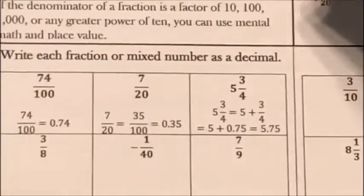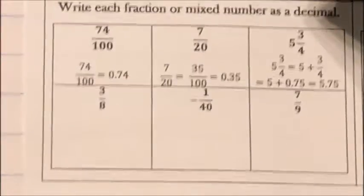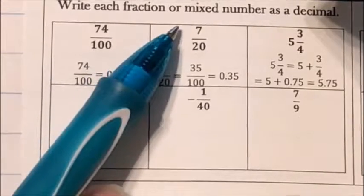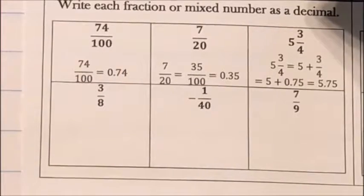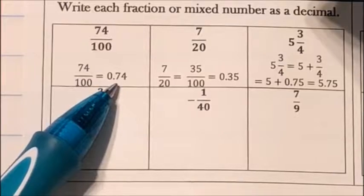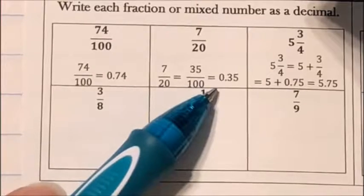There are a couple of try-it problems — go ahead, pause the video, try them out, and when you're done we'll go over the answers together. The first thing is to write each fraction or mixed number as a decimal. So I have 74 over 100, which is straightforward. For 7 twentieths, I change the denominator to 100 and get 0.35.